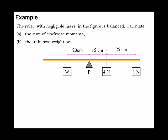Let's take a look at this example. The 4 newton force acting downward contributes to a clockwise moment about pivot B. Likewise, the 1 newton force, also acting downward, contributes to a clockwise moment about the same pivot.